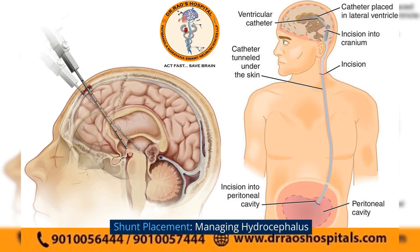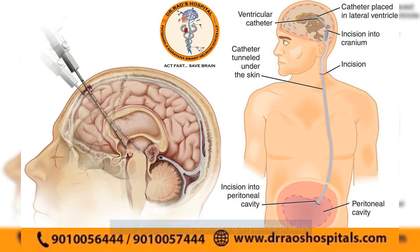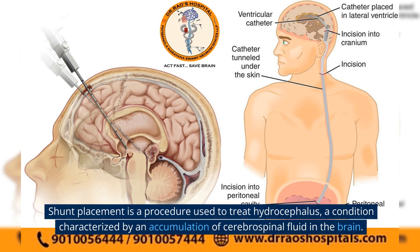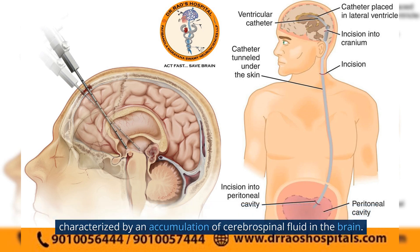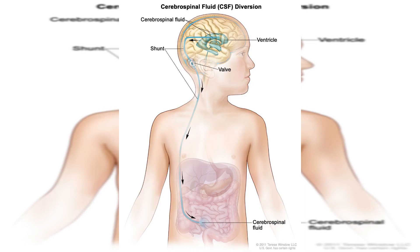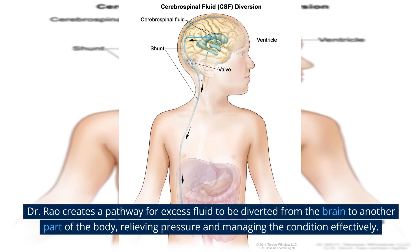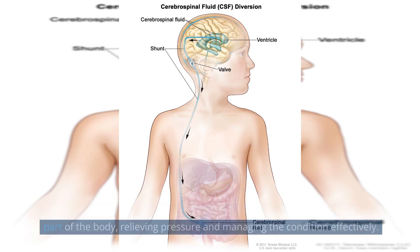Shunt Placement – Managing Hydrocephalus. Shunt placement is a procedure used to treat hydrocephalus, a condition characterized by an accumulation of cerebrospinal fluid in the brain. Dr. Rao creates a pathway for excess fluid to be diverted from the brain to another part of the body, relieving pressure and managing the condition effectively.